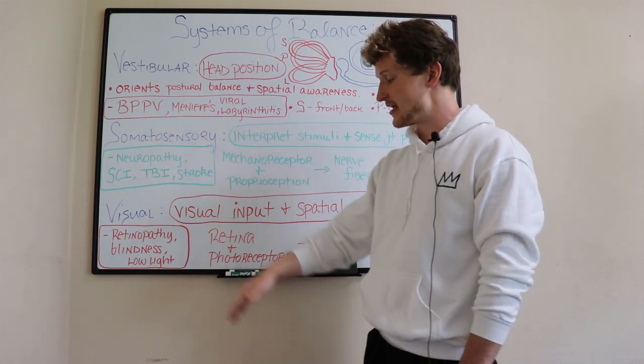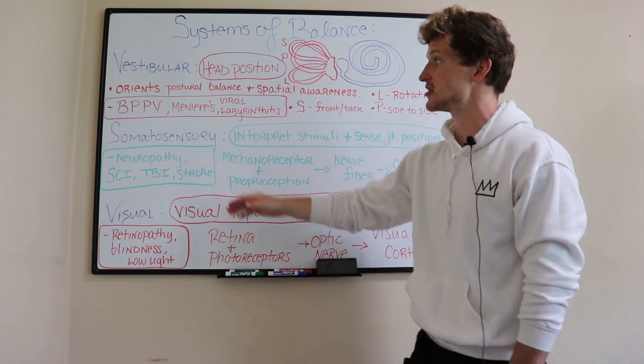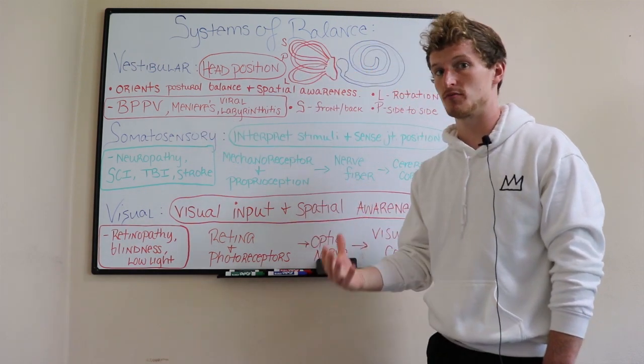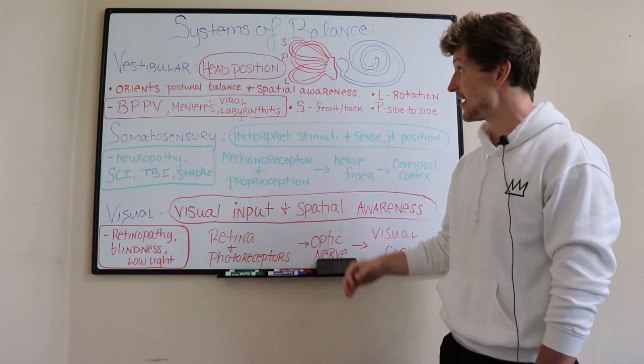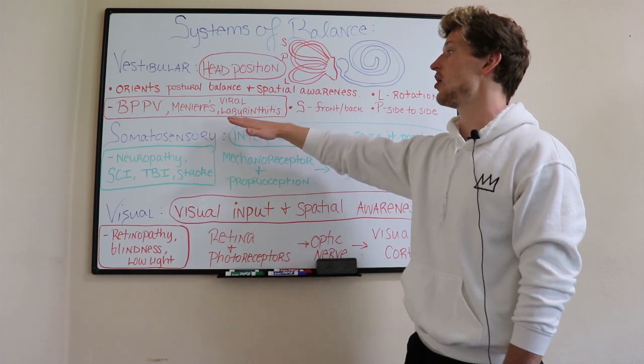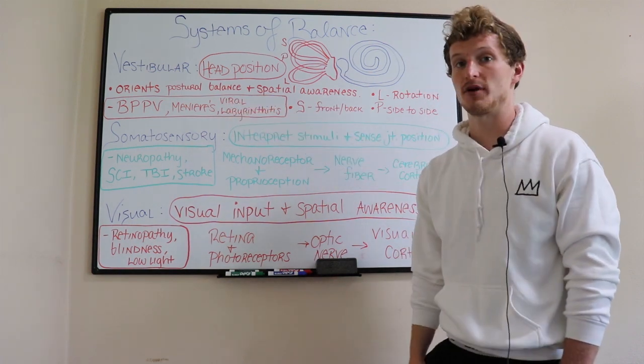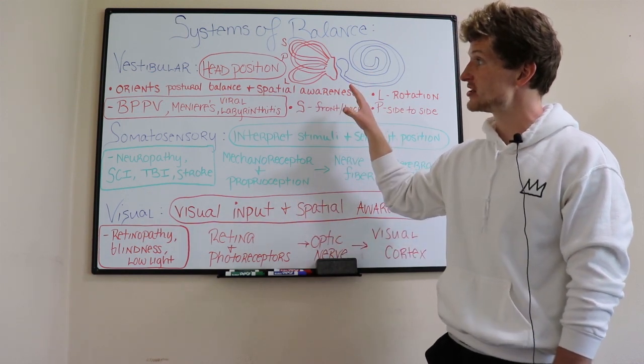Meniere's disease is an expansion of that endolymph, which puts pressure on this membrane and can cause vertigo-like symptoms, nausea, and vomiting. Viral labyrinthitis is an inflammation of our vestibular nerve, where a viral agent causes that inflammation and those symptoms. So that is the vestibular system.